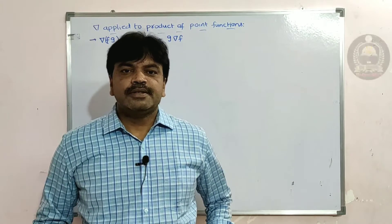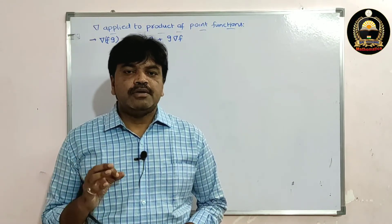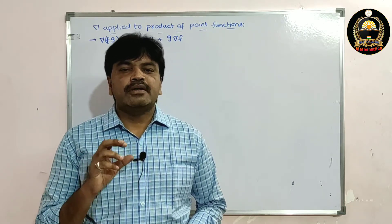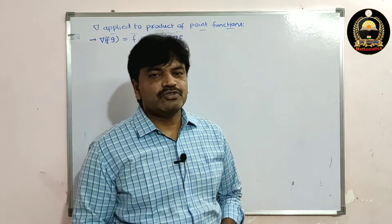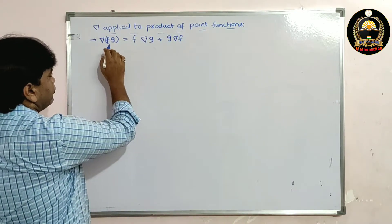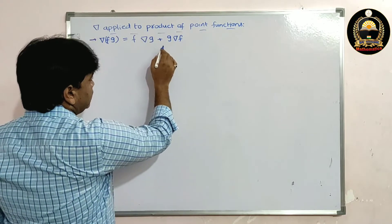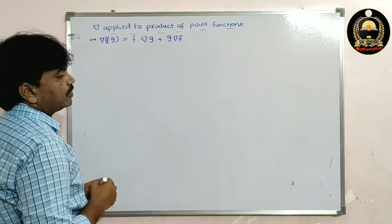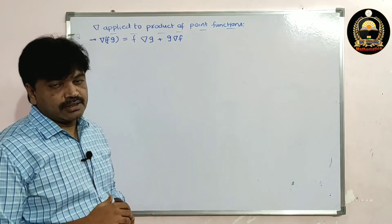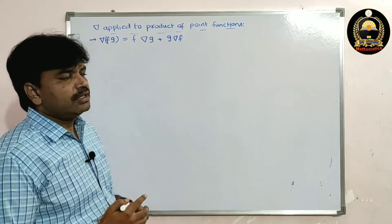Good morning friends. In this lecture I'm going to solve a property on del applied to a product of scalar functions. The property is: del(fg) = f·del(g) + g·del(f). We take the LHS, apply some formulas, and then prove the RHS.